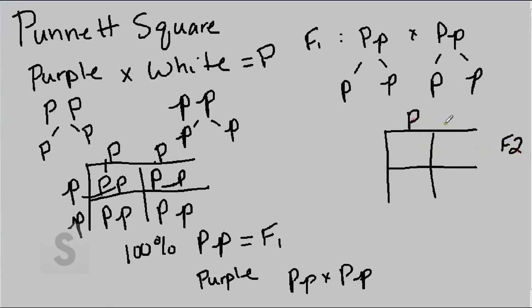We have our big P here, little p here, big P here, little p there. Now we have a big P, big P from this individual, a big P, little p, a big P, little p, and a little p, little p.